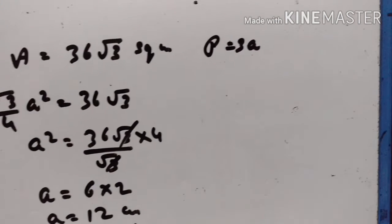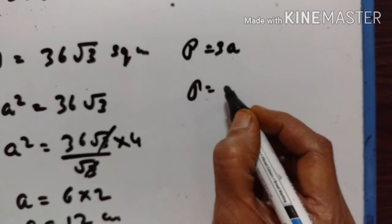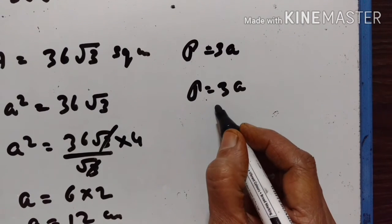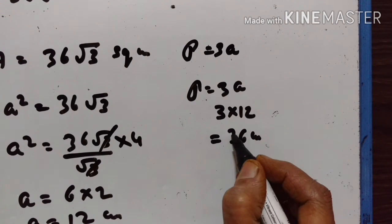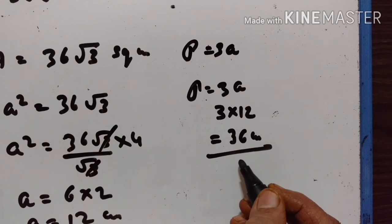Therefore, perimeter equals 3 times A, which is 3 times 12, equals 36 centimeters. Perimeter is equal to 36 centimeters.